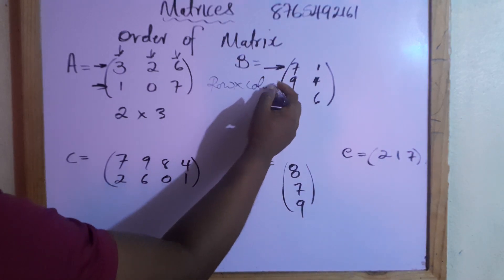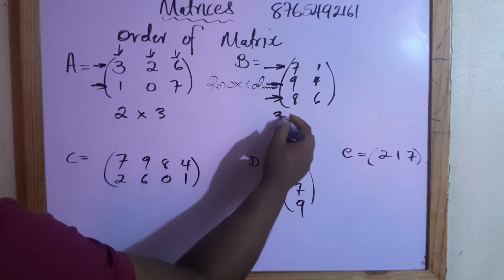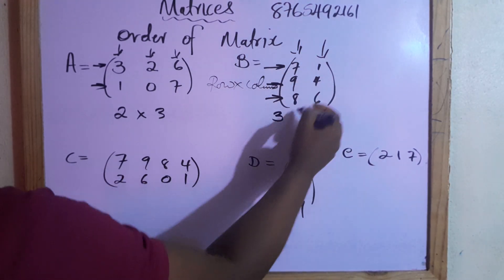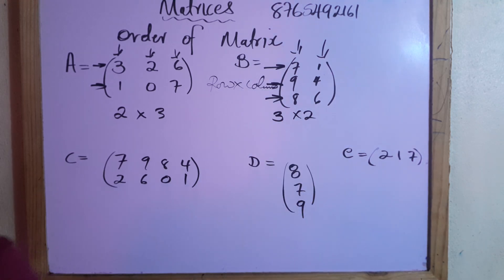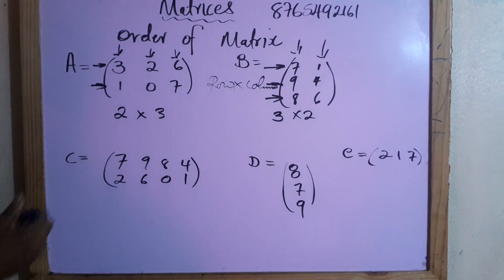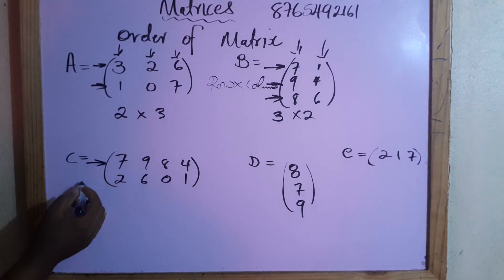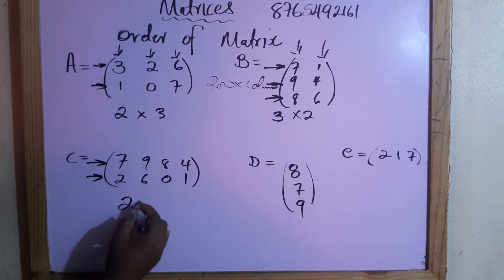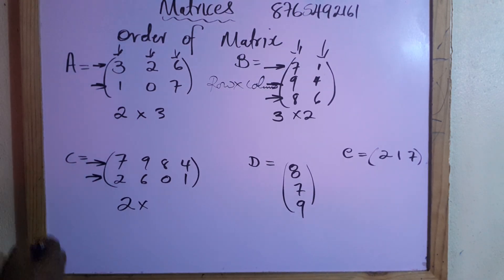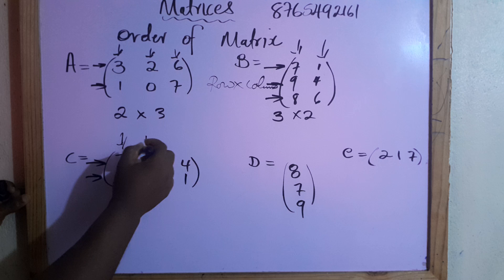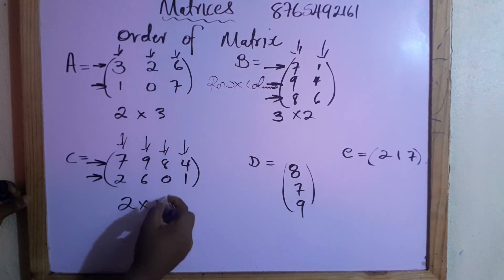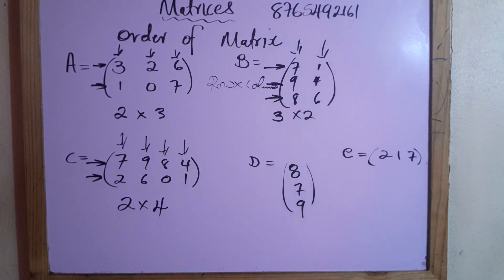Let's look at B. Rows run from left to right — we have one, two, three rows and two columns, so this is a three by two matrix. For C, we have two rows and four columns, so it's a two by four matrix. Leave in the comments: what is the order of D and E?